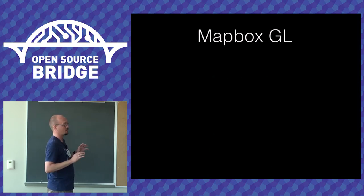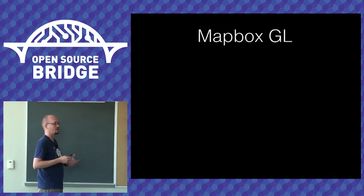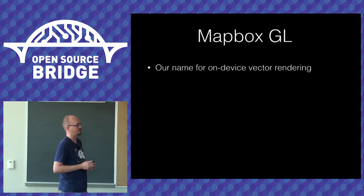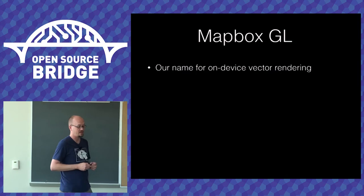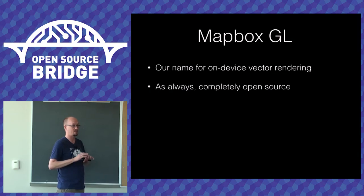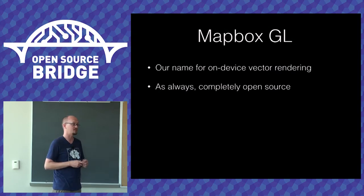What I'm going to be talking about is what we call Mapbox GL — a nod to OpenGL if you're familiar with low-level graphics programming. It's our name for the on-device vector rendering stack we're building. We open source as much as practicable, and everything I'll talk about here is completely open source BSD-licensed, useful both as a learning tool and as component parts for other problem spaces.